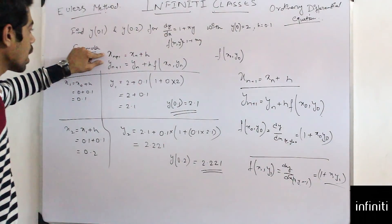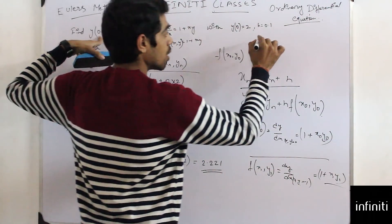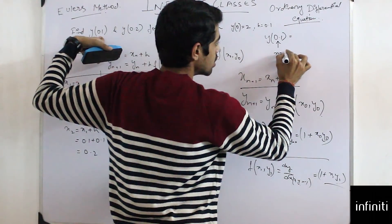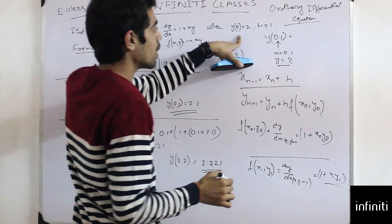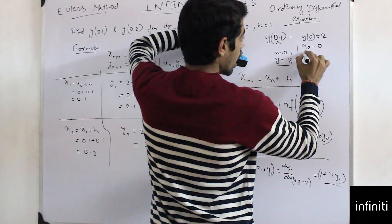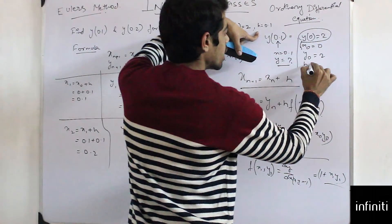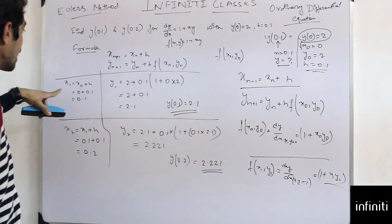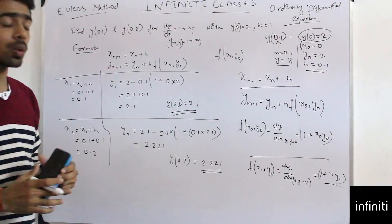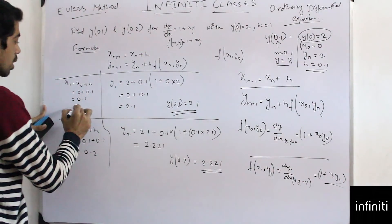Now, to find y(0.1), that means x = 0.1 and we need to find y. We are given y(0) = 2, which means x_0 = 0 and y_0 = 2, with h = 0.1 constant. First, x_1 = x_0 + h = 0 + 0.1 = 0.1.